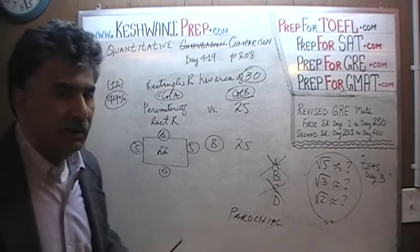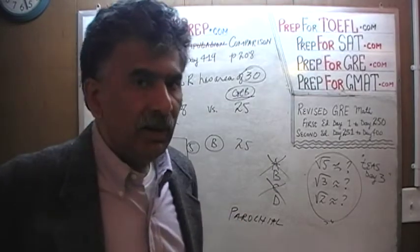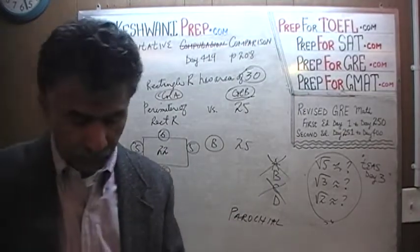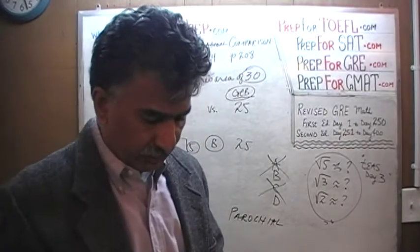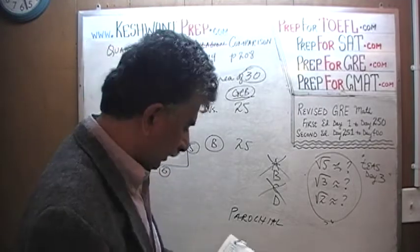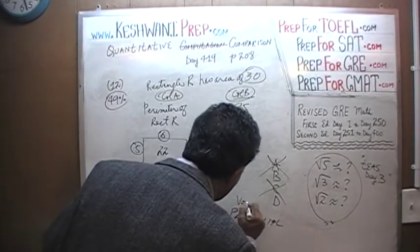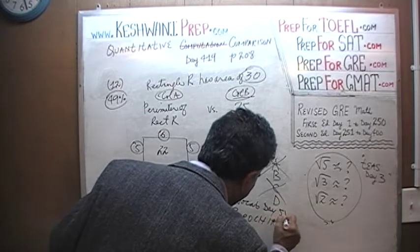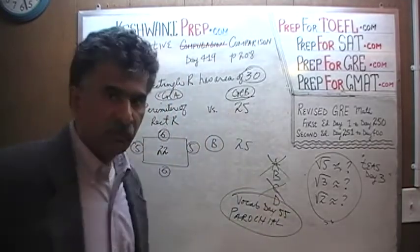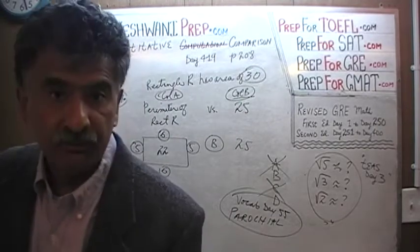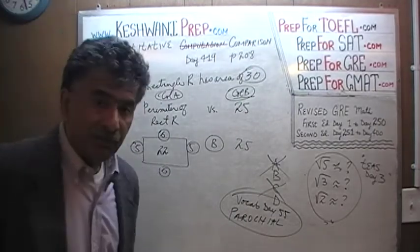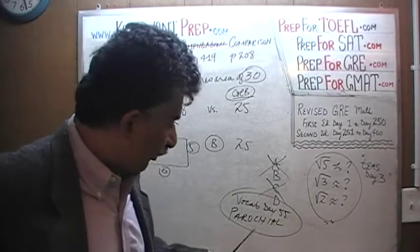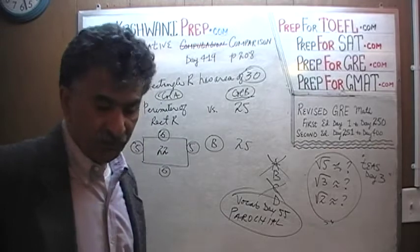So the answer is either B or D. Now we have to think outside the box and not in a parochial manner. There are two categories of numbers to contemplate: nice numbers — whole, positive numbers — and nasty numbers. Always go through the list of nasty numbers systematically. The nastiest of all is zero, then one, then negatives, then fractions. By the way, the word parochial was covered on day number 55 — type in "GRE vocabulary words day 55" to find that video.